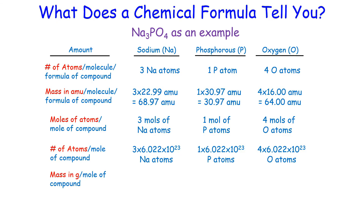Finally, the total mass of each element in grams per mole of sodium phosphate: 3 moles of sodium times the molar mass of sodium gives 68.97 grams; phosphorus gives 30.97 grams; and oxygen gives 64 grams.